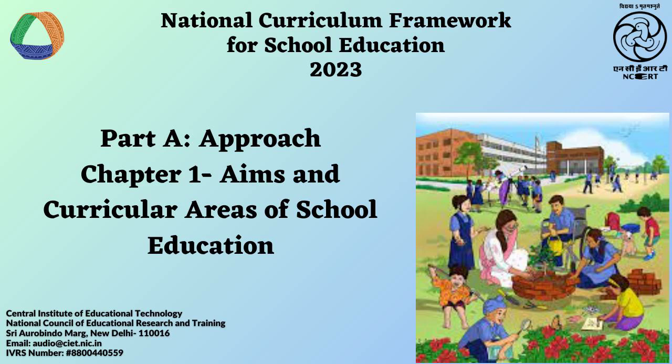NEP 2020 states: The aim of education will not only be cognitive development, but also building character and creating holistic and well-rounded individuals equipped with the key 21st century skills. Thus, the development of well-rounded individuals capable of rational thought and action, equipped with appropriate knowledge and capacities, and possessing desirable moral and democratic values, is at the core of the vision of education.